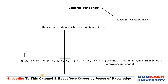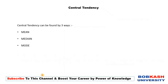There are three ways to calculate the central tendency: mean, median, and mode. We will go through each one and study how each is calculated and the significance of each method over the others.